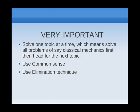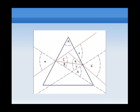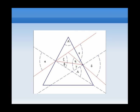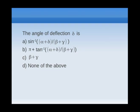Use elimination technique. Like for example, this problem here. What we have here is a prism and there's a light ray which is being deflected by this prism. And the angle of deflection is delta. And the question is that we have to find this angle of deflection delta.